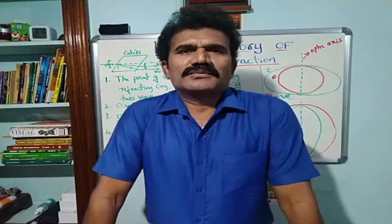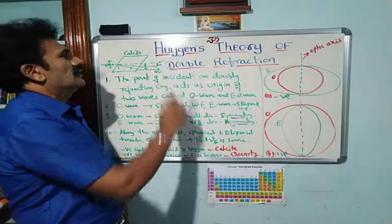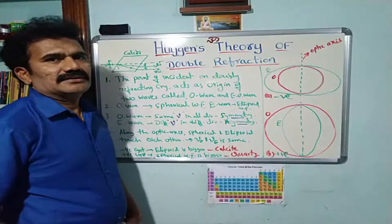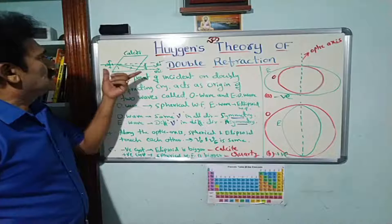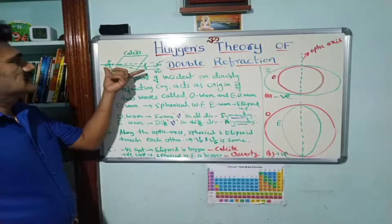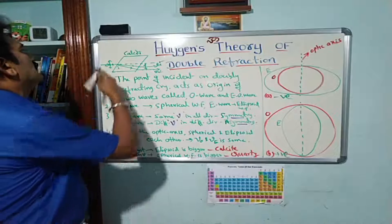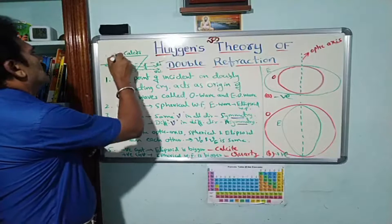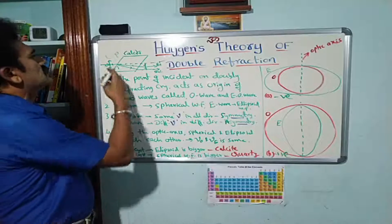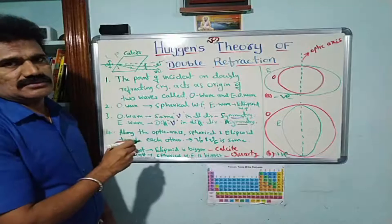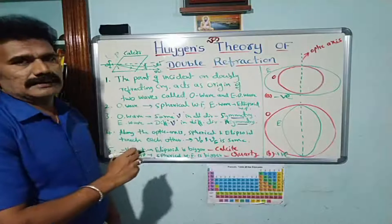Welcome students. In this video I am going to explain Huygens' theory of double refraction. For recap, what is double refraction? Looking at this figure showing double refraction of light: when unpolarized light is incident on a calcite crystal, at the point of incidence itself we can see there are two refracted rays. One is called the ordinary ray and the other is called the extraordinary ray.